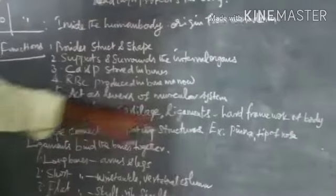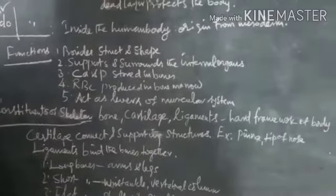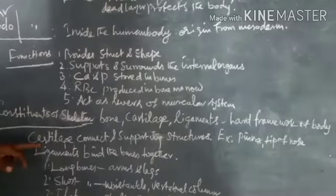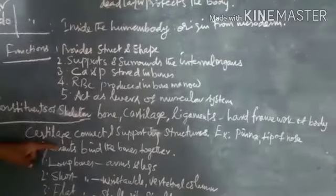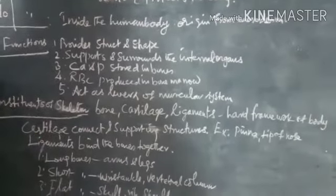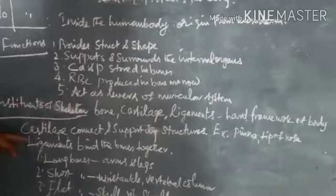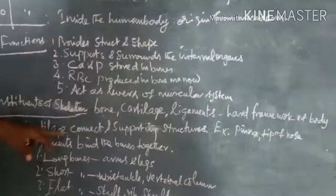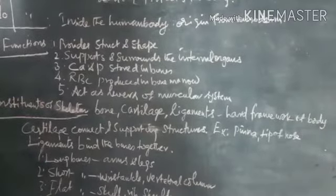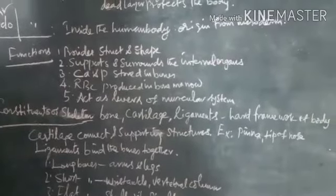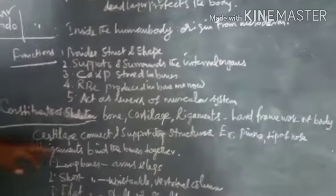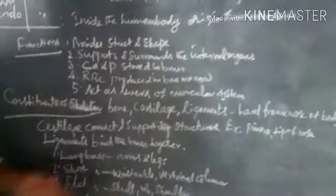What are the constituents of skeleton? Human skeleton consists of bone, cartilage, and ligaments which gives the whole framework of the body. Bones are two types: cartilage and bone. Cartilage is a flexible one where bone is the hardest part of the body. The cartilage collects and supports the structures, example pinna which is flexible, then tip of nose. The ligaments bind both together, bone to bone.